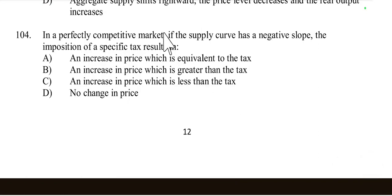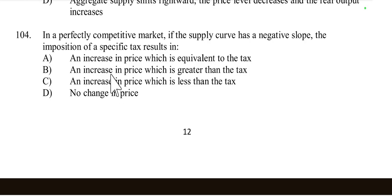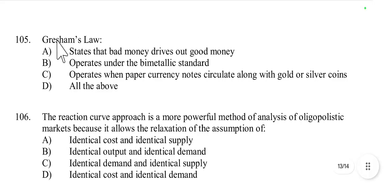Question number 104: In a perfectly competitive market, if the supply curve is negatively sloped and a specific tax is imposed, the result is an increase in price which is greater than the tax. When the supply curve is negatively sloped, the imposition of a tax increases the price by more than the tax amount, because the reduction in output caused by the tax leads to a larger price increase as farms reduce supply. So option B is correct.